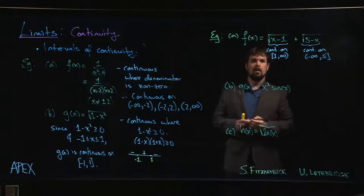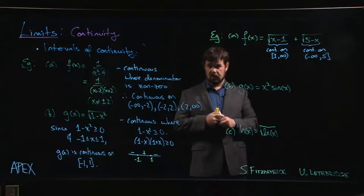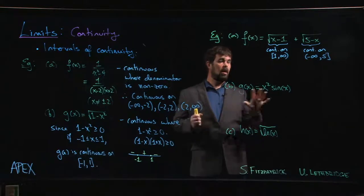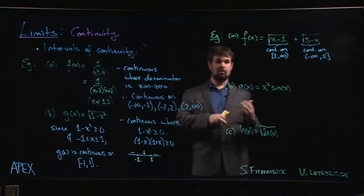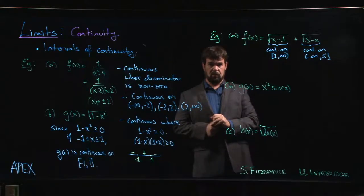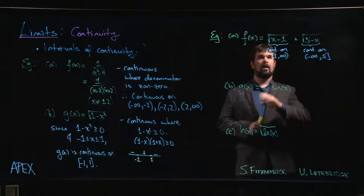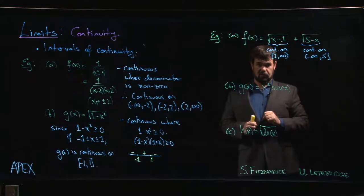This one is continuous on the interval from minus infinity up to 5. So if we want to figure out where this function is continuous, well our properties of continuous functions say that if you add two continuous functions you will get a continuous function. So this f of x is going to be continuous at every point where this function is continuous and this function is continuous.